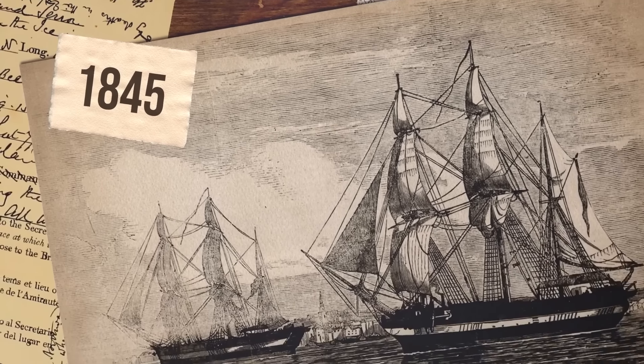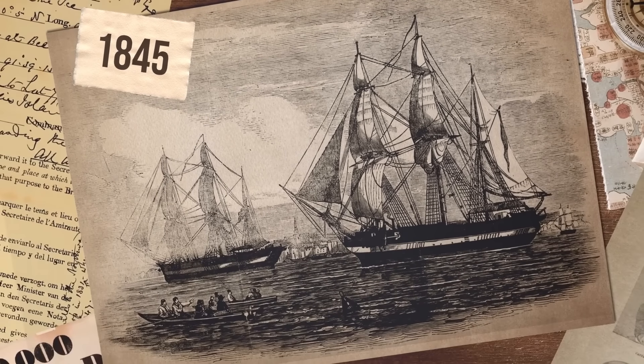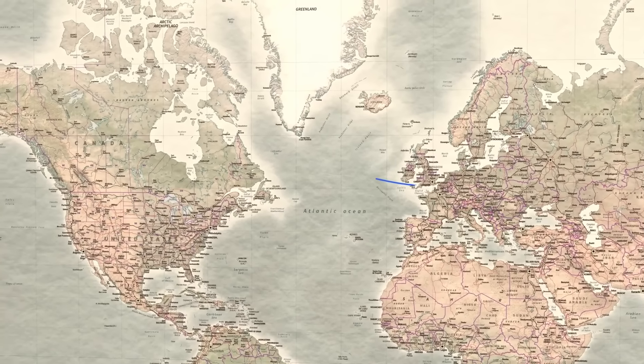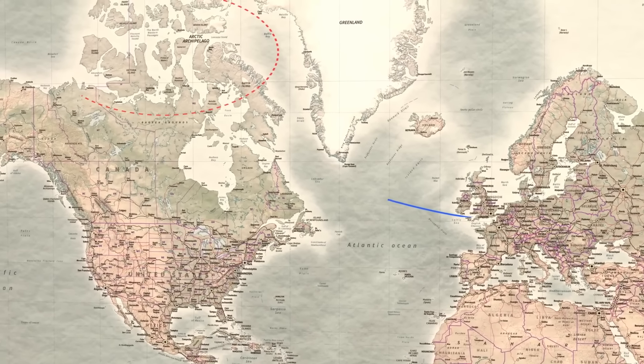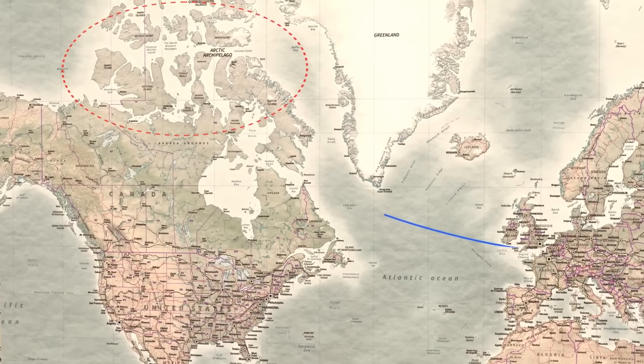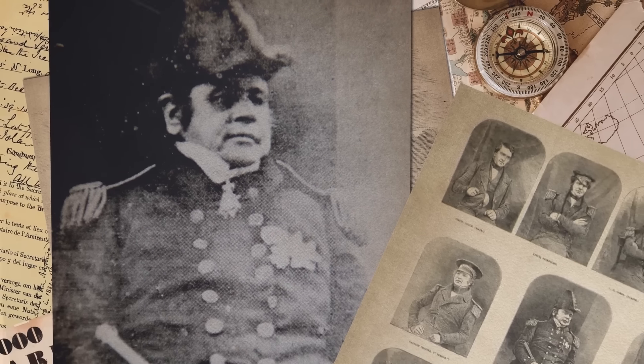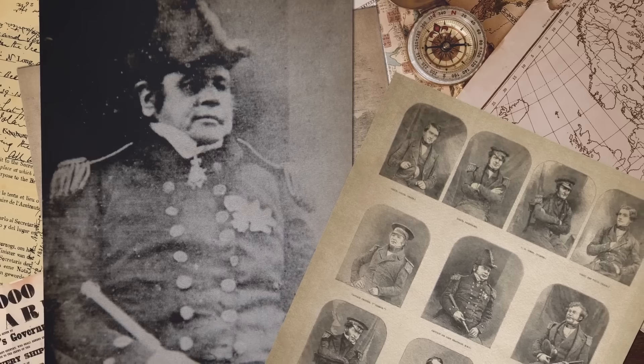In 1845, two ships, HMS Terror and HMS Erebus, set sail from England to find the Northwest Passage, a crucial sea route between the Atlantic and Pacific Oceans. Captain Sir John Franklin was leading the expedition. He was a seasoned polar explorer who had already tried twice to find the passage. Everything looked promising, but the journey ended in tragedy.